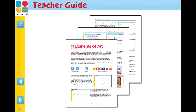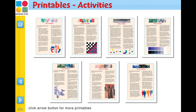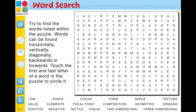Also included in this resource is a printable PDF teacher guide and interactive introduction. Printable PDF versions of the activities and posters found in each chapter are available. The completely interactive word search allows students to touch the first and last letters of a hidden word in the puzzle to circle it. The found words then get crossed off in the word list.